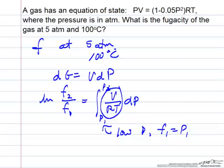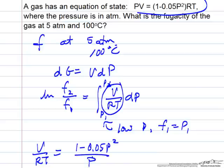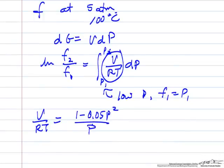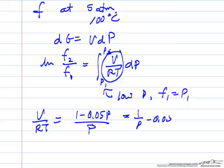So this equation here we want to substitute in from our equation of state. We take this equation of state, V over RT equals 1 minus 0.05 pressure squared over pressure. Remember now on this exam we actually simplified this to make the calculations easier, so we made that pressure to the first power so that this is 1 over pressure minus 0.05.